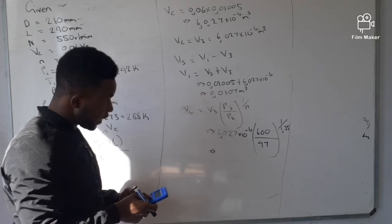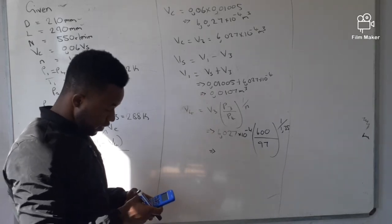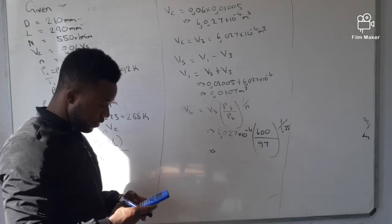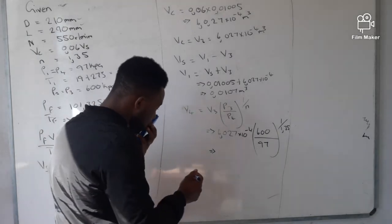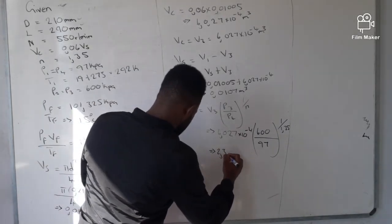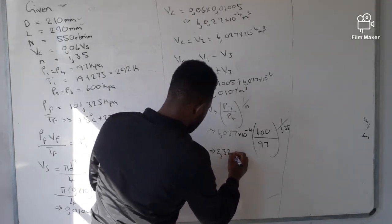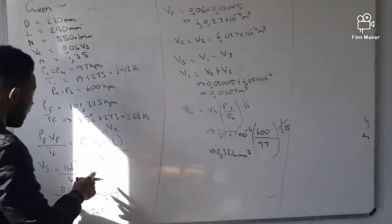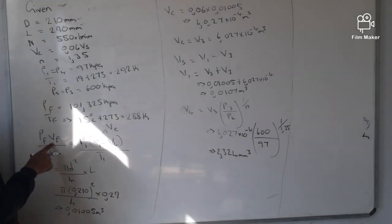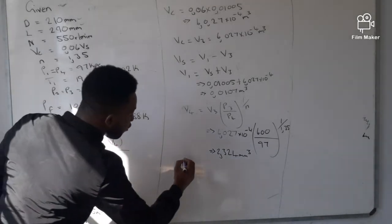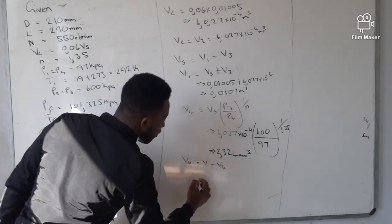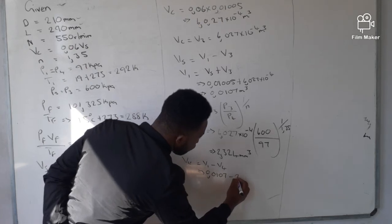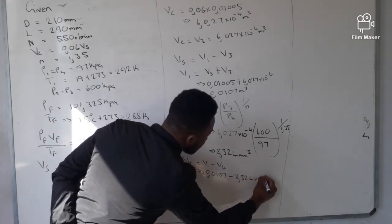Punching into the calculator: 6.027 × 10⁻⁴ × (600 / 95)^(1/1.35). This gives V4 = 2.324 × 10⁻³ cubic meters. Now we have both V1 and V4, so the effective volume is: Ve = V1 − V4 = 0.0107 − 2.324 × 10⁻³.